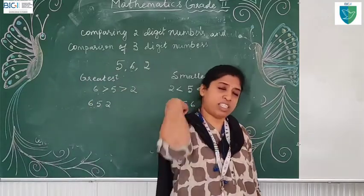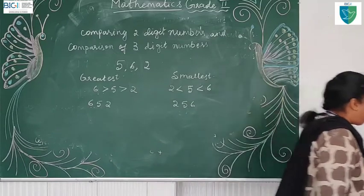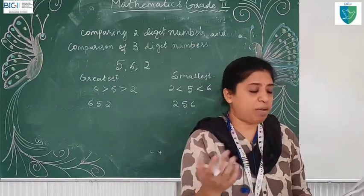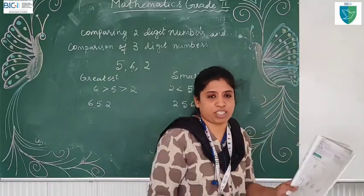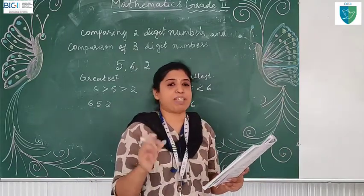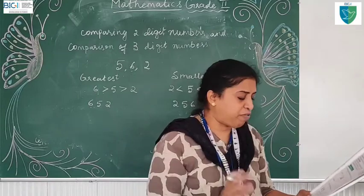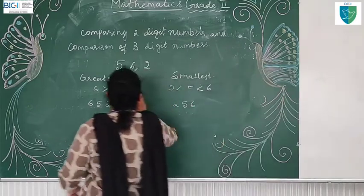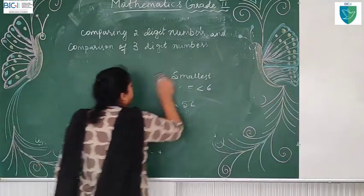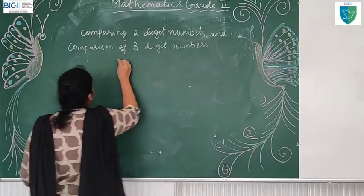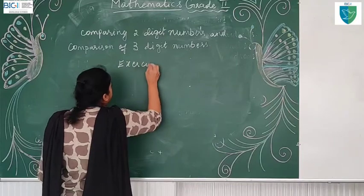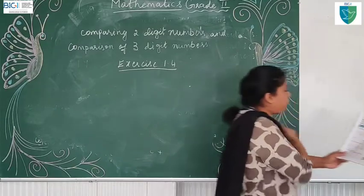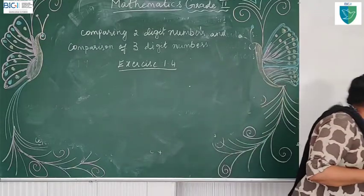Understood? This is the smallest number — two hundred and fifty six. Now I will do the abacus. I will do exercise 1.4, children — I will give two examples and teach you; the other problems you have to do as homework in the textbook by yourself. Draw the beads for the given numbers.